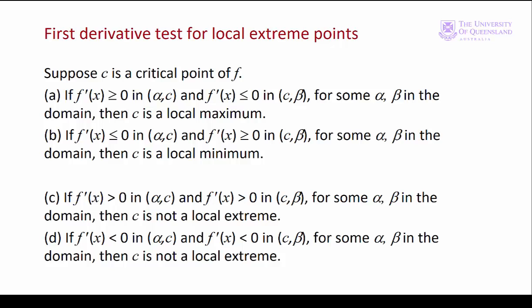We have a first derivative test for local extreme points. If C is a critical point — that is, F'(x) at C is equal to 0 — then we look at how the first derivative changes around that point C. If F'(x) is greater than 0 below C and less than 0 above C, then C is a local maximum. If the first derivative is negative below C and positive above C, then C is a local minimum point. Of course, if the sign of the first derivative doesn't change over that sub-interval, then we don't have an extreme point.